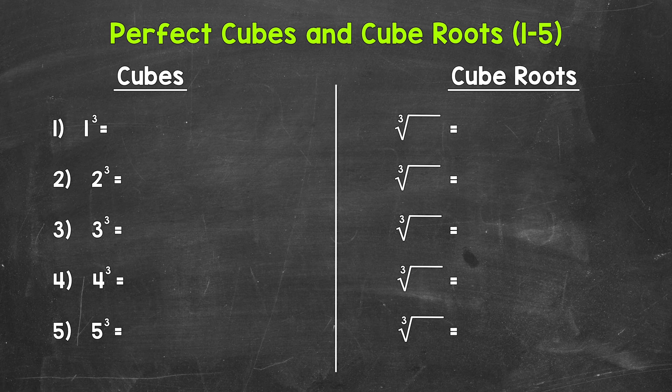Let's jump into the first five perfect cubes and cube roots, starting with number one where we have one cubed. That means one times one times one. One times one is one times one is one. So one cubed equals one.